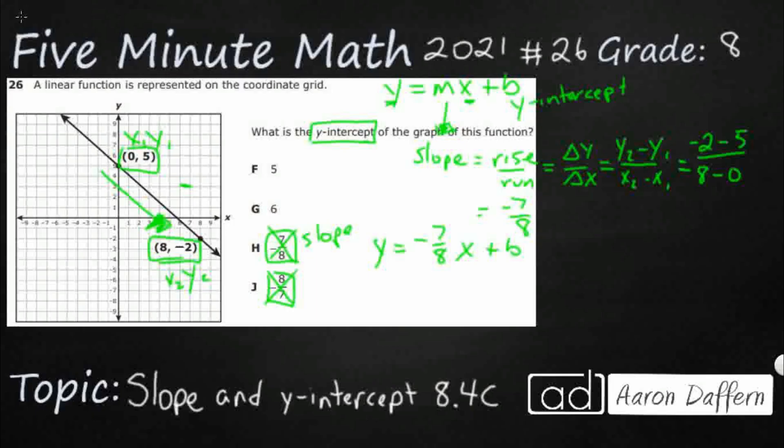So the y-intercept, that's part of the intercept in the slope-intercept form. Well, what happens if x is zero? So if x is zero, we would say y equals negative 7 eighths times zero plus b. Well, if negative 7 eighths times zero is just going to be zero, right? So if x is zero, then y equals b.